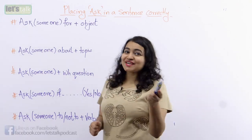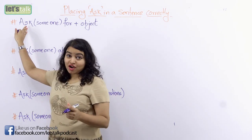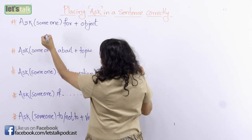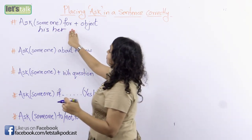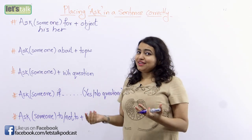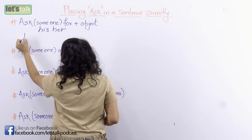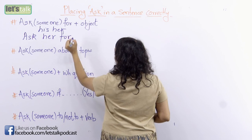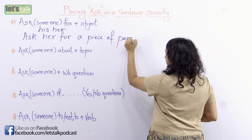Alright, the first tip to use the word 'ask' in a sentence correctly is: use the word 'ask', followed by someone — it could be 'his', 'her', or the name of a person — followed by the word 'for', followed by an object. For example: 'Ask her for a piece of paper.'